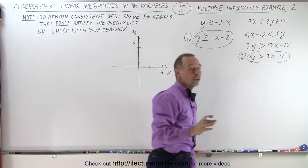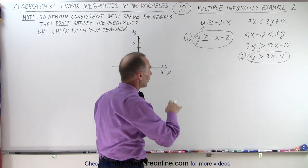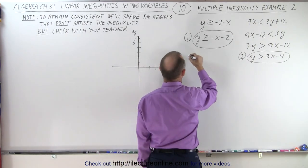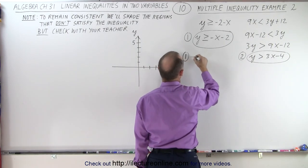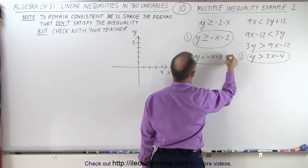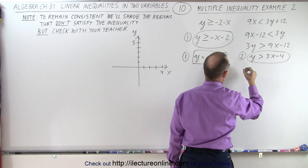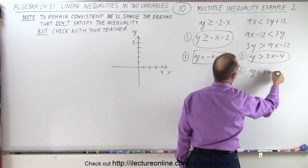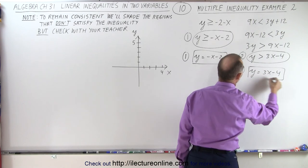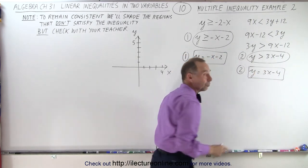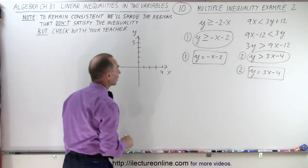Next, what we need to do is find the equations by changing the inequality symbols to equations to find the boundary lines. For the first equation, we end up with y = -x - 2, and the second equation becomes y = 3x - 4, and we do that to find the boundaries. Now be careful here; we don't have an equal sign, so that means we need the dashed line for the second equation.